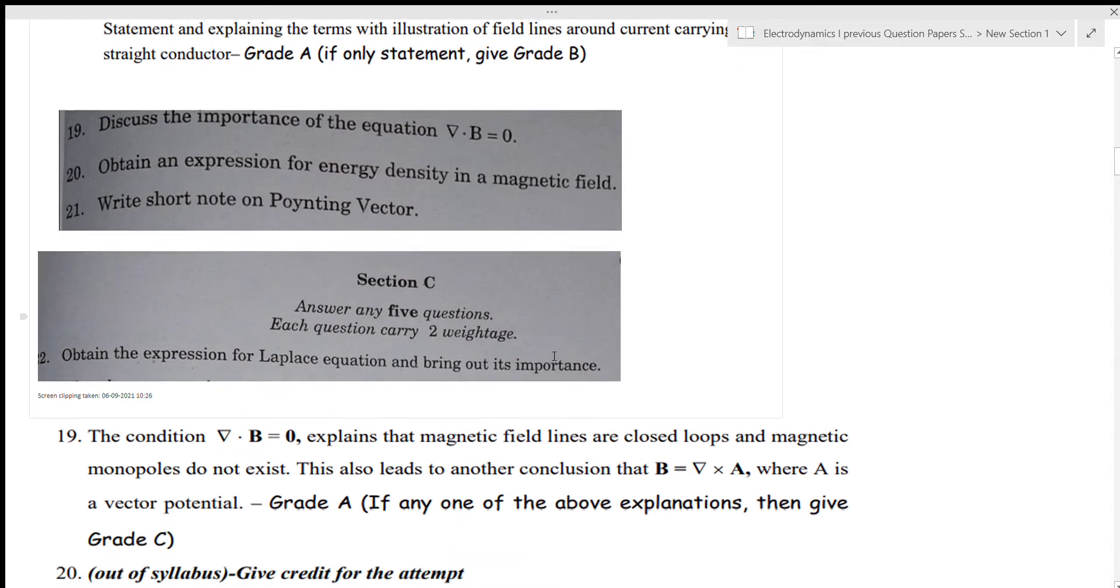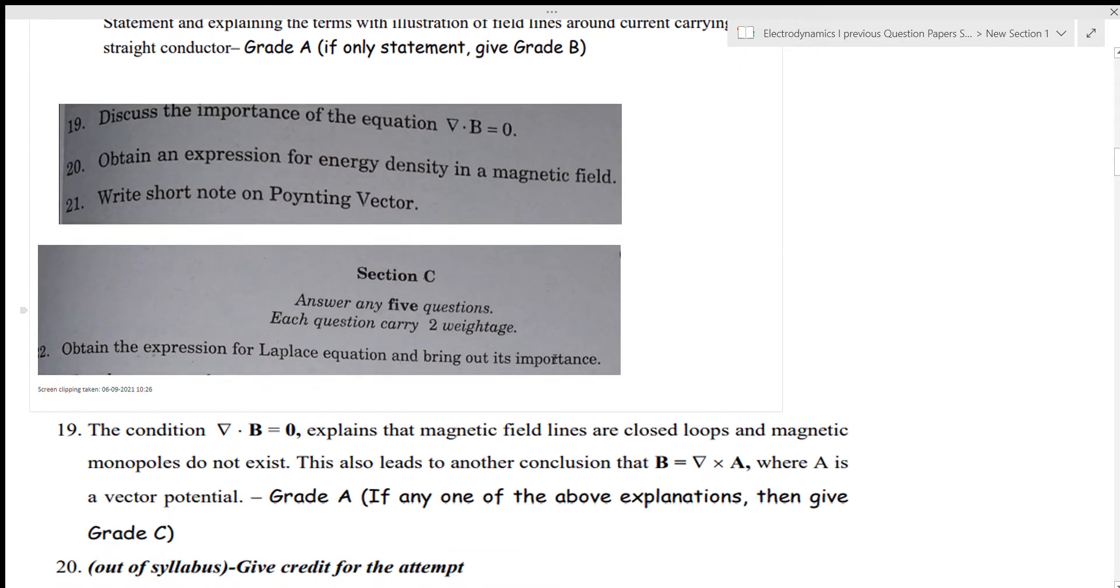If del dot B is equal to zero, the magnetic monopoles do not exist and the magnetic field lines are closed loops. If del dot E is equal to q by epsilon zero, as in electrostatics, the field lines originate from a point charge. The vector potential relation is del cross A.